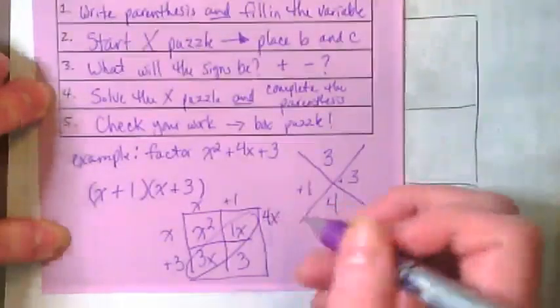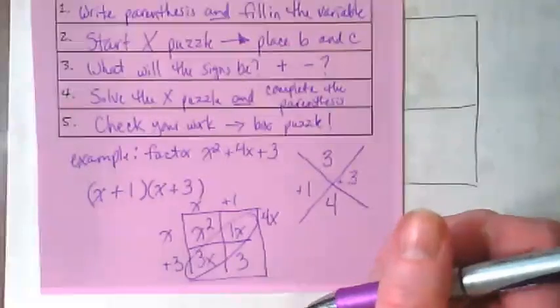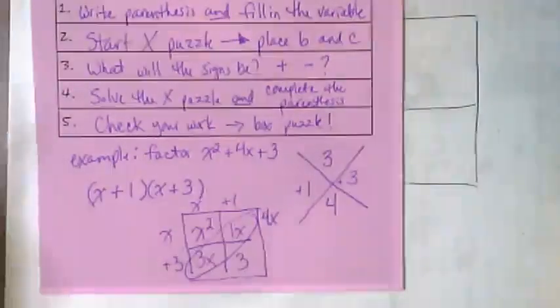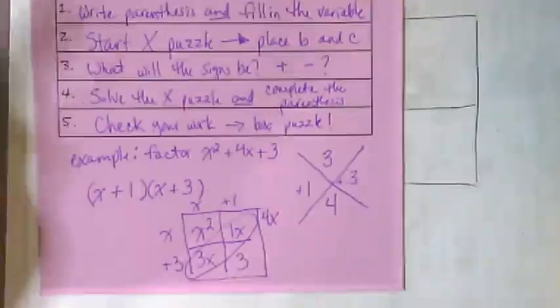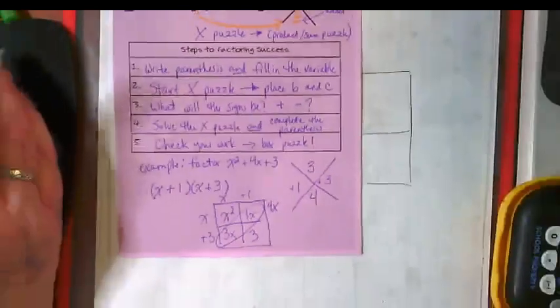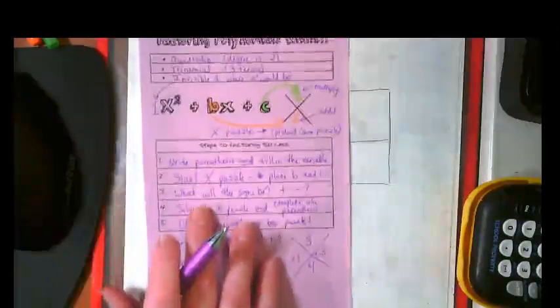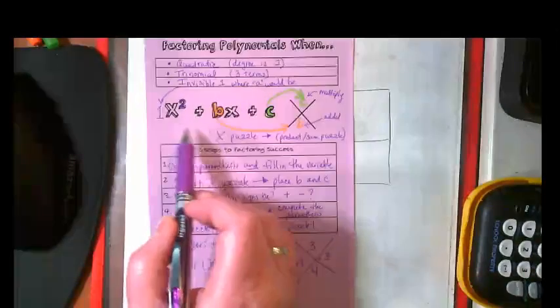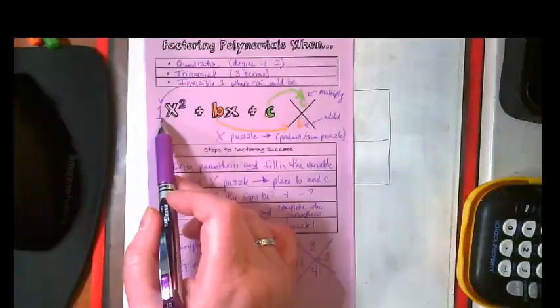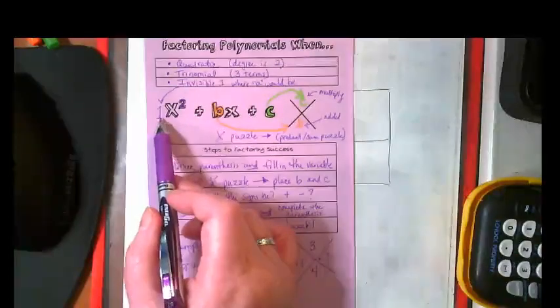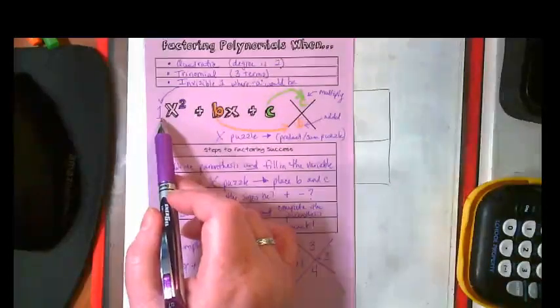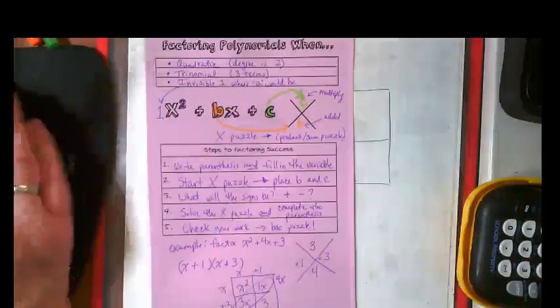So you combine like terms to get that middle term. And that is the five steps that it takes for us to factor a polynomial when we have an invisible one as our first coefficient.